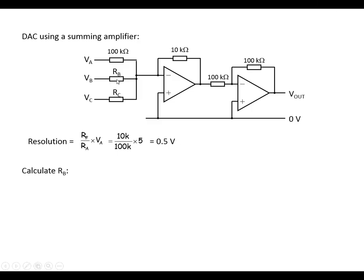To work out what RB's got to be, if this is the units, this will represent the 2s. So when this is high, it's got to represent double the voltage that the voltage at A does. So in other words, it's got to represent 1 volt at the output. So we've plugged the numbers in, we've rearranged the equation, and we get RB that's 50k.